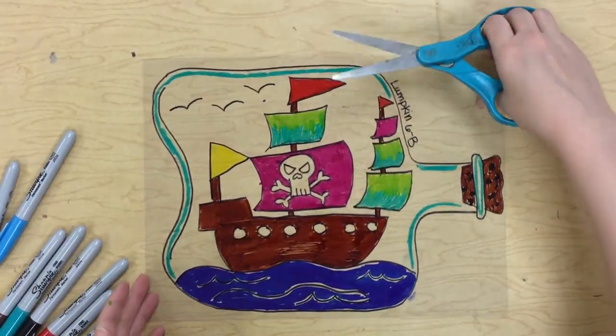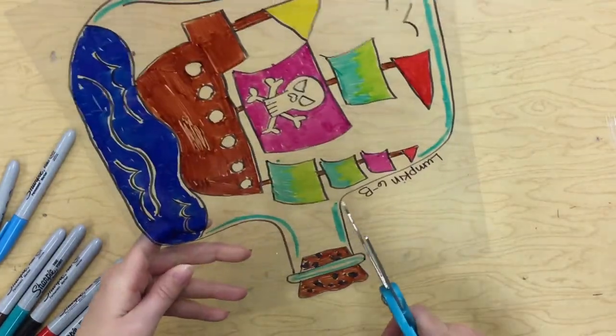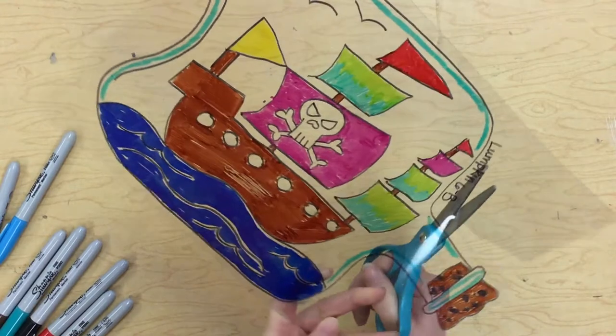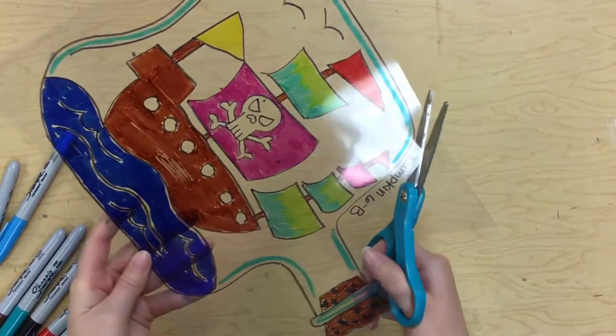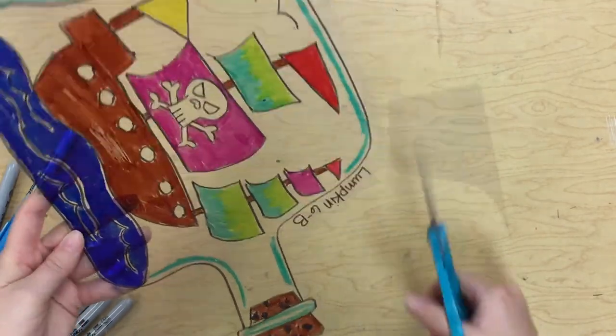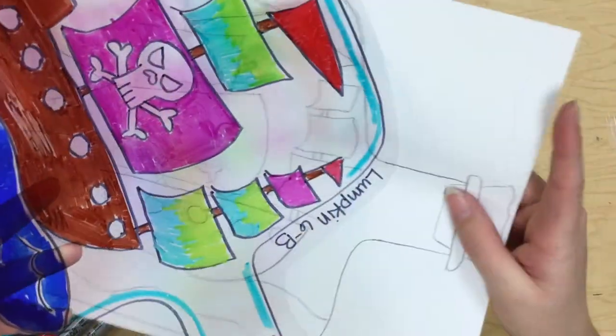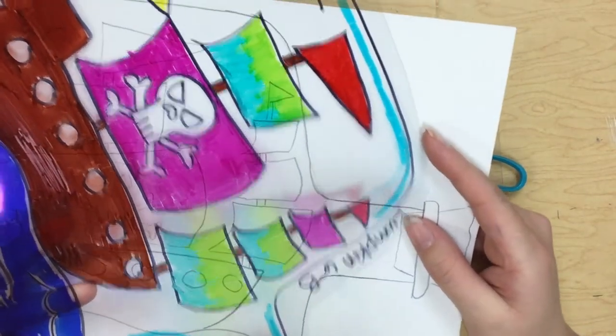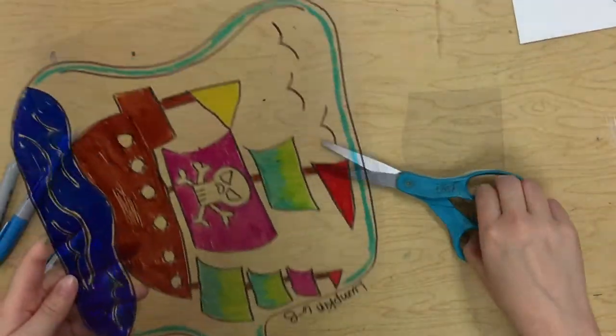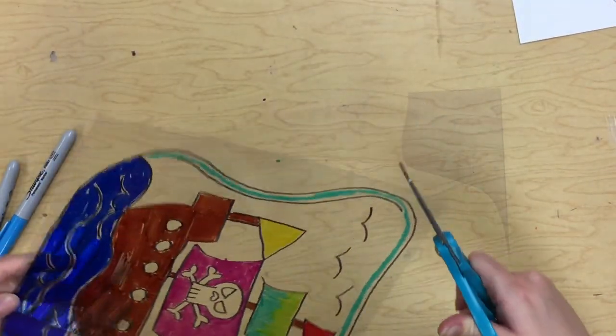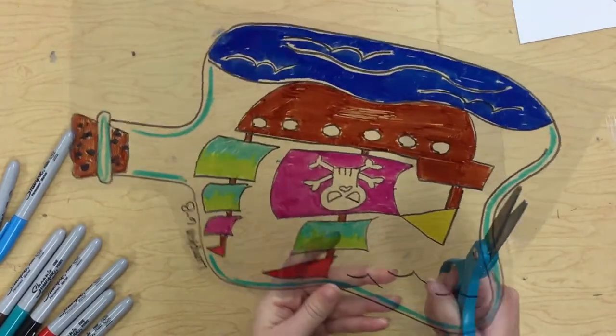You're going to cut off the excess transparency paper. You're going to leave a little bit on the outside, about half an inch or a quarter of an inch all the way around, because we don't want to cut right up against your lines. So we'll leave a little bit of a border.